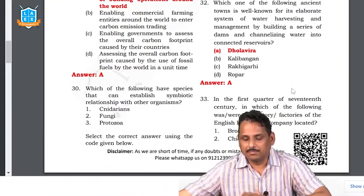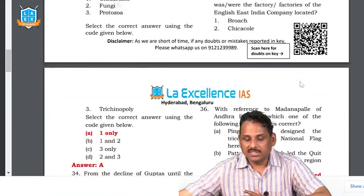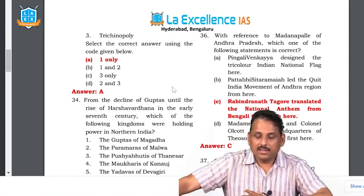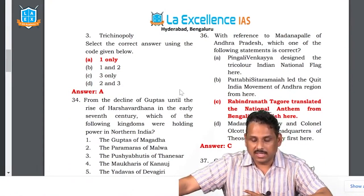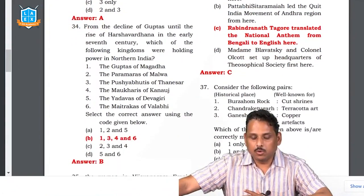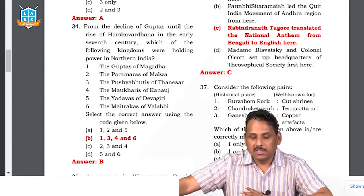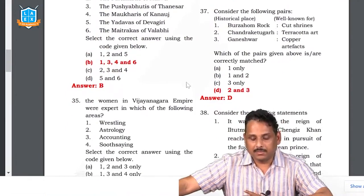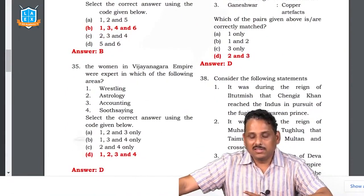Question 31: which ancient town had an elaborate system of water harvesting? Dholavira. Kalibangan they got horse — Ropar, I think rice. Question 32: in the first quarter of the 17th century, in which of the following were the factories of the East India Company located? The answer is Broach; A is the answer. Question 33: from the decline of the Guptas until the rise of Harsha Vardana, which kingdoms were holding power? Between two major kingdoms many small kingdoms existed — Paramaras, Pushyabhaktis, Maitrakas. CNA sir will deal with this in detail.